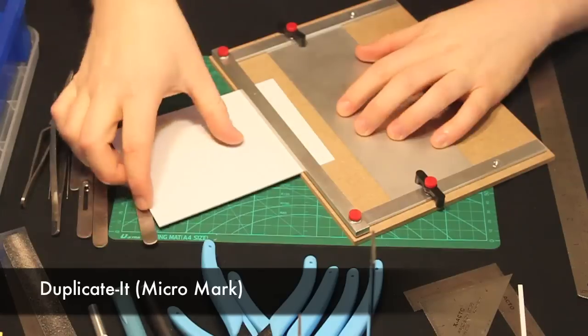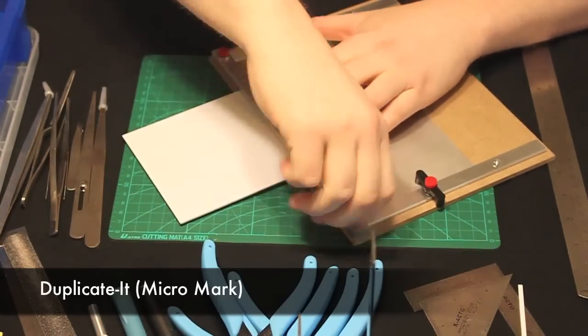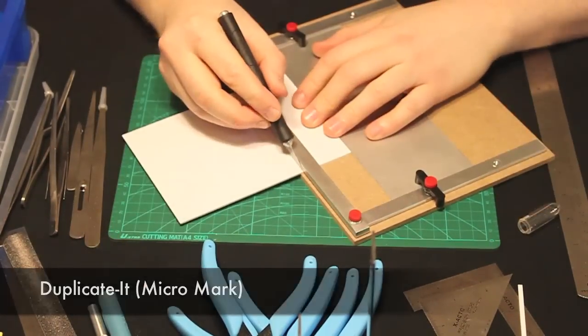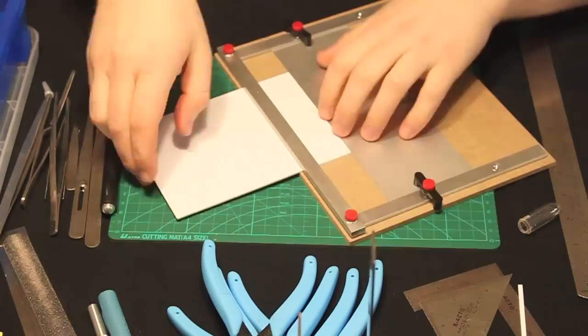This is called Duplicate It. I got mine at Micromark. It's great for cutting sections in heights or widths depending on what you need. That way everything can match.